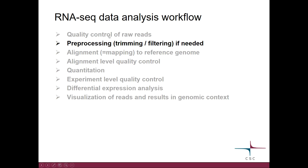If we discovered problems in our reads when we performed quality control, we might decide to do some trimming or filtering. This really depends on what you are planning to do afterwards, what analysis tools you are going to use. For example, what kind of aligner you are going to use in the next step, since some aligners can cope with more mismatches than others.